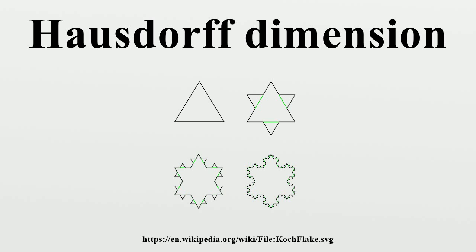The Hausdorff dimension is a successor to the simpler, but usually equivalent, box-counting or Minkowski-Bouligand dimension. The intuitive concept of dimension of a geometric object X is the number of independent parameters one needs to pick out a unique point inside.